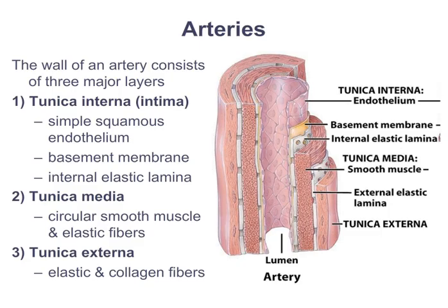Both arteries and veins are comprised of three principal tissue layers called tunics. The first is the tunica interna, or tunica intima — the internal layer composed of simple squamous endothelium — which ensures blood has a friction-free surface so there's no inappropriate clotting. The second is the tunica media, composed of smooth muscle fibers, which adjusts lumen size to maintain blood pressure and regulate blood flow. The third is the tunica externa, a thick layer of elastic and collagen fibers.